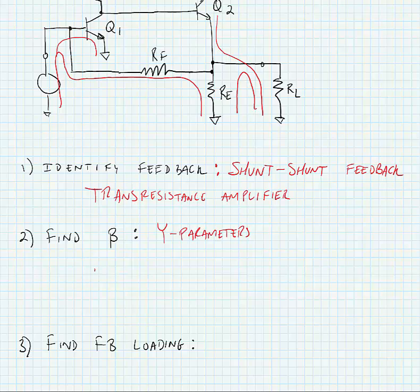Our feedback network is as follows. This is port 2, this is port 1. And beta is, in this case, I1 over V2 when V1 is equal to 0.